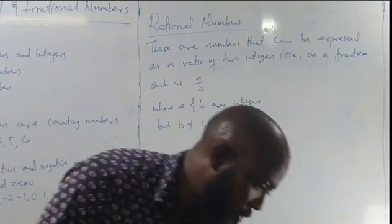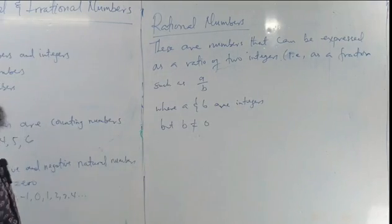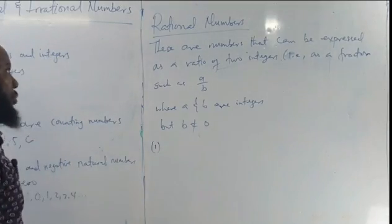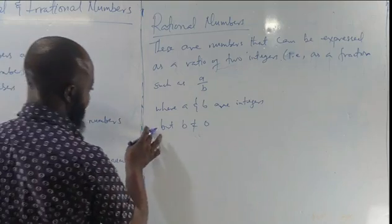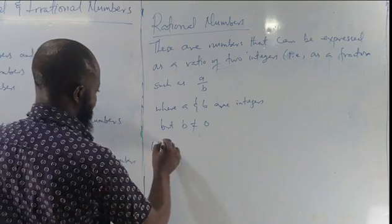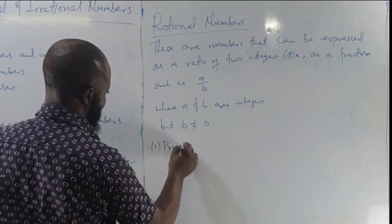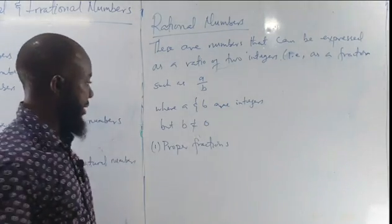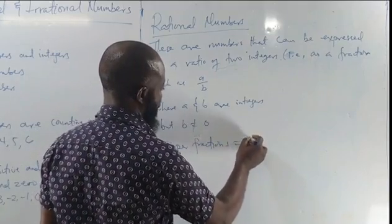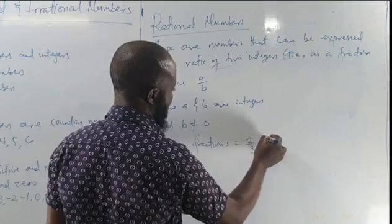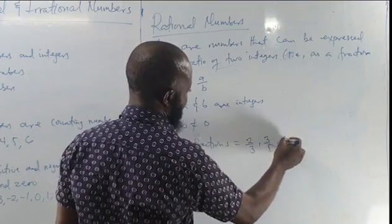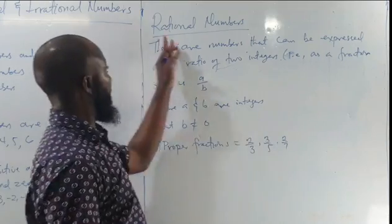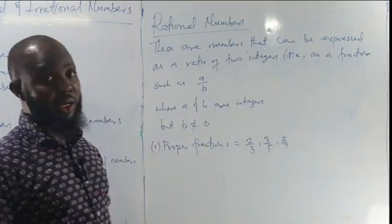Let's now look at examples of rational numbers. I'm going to give you about six examples. The first example is proper fractions — fractions like 2 over 3, 3 over 5, 2 over 7. All these are proper fractions, and all of them are rational numbers.